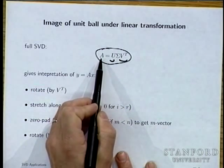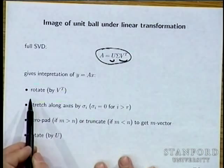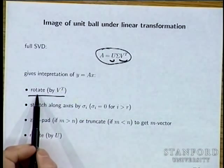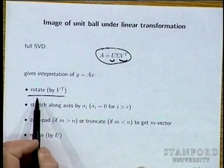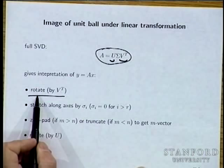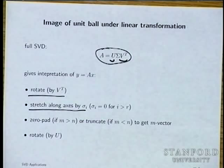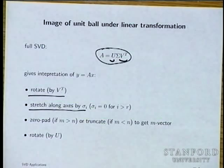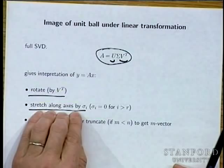To operate by A on a vector, you carry out three operations: first multiply by V^T (a rotation/reflection), then apply Σ (stretch along axes by σ_i), then multiply by U (another rotation). The first and last operations are isometric — no gain anisotropy. The middle step is where you put in the differing gains.